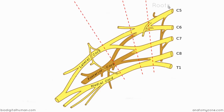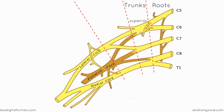Here we're looking at the roots of the brachial plexus. The numbers on the right indicate the spinal nerves giving rise to these roots. The brachial plexus is formed from the ventral rami of C5 to C8 and most of the anterior ramus of T1. These are called roots, and then the roots form trunks: C5 and C6 converge to form the superior trunk, C7 continues to form the middle trunk, and C8 and T1 form the inferior trunk.